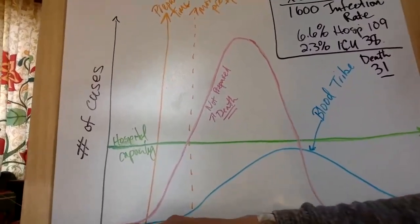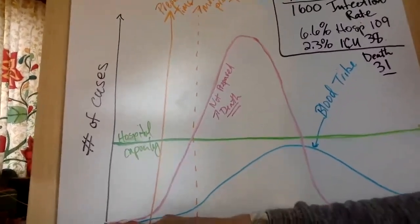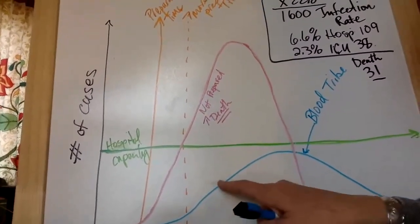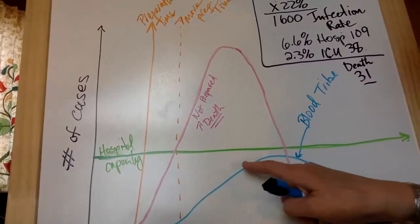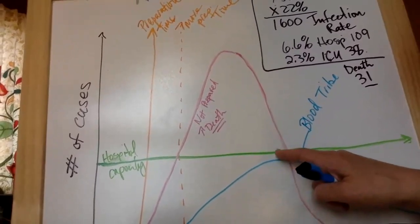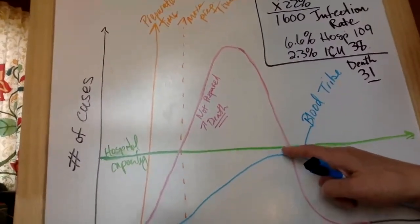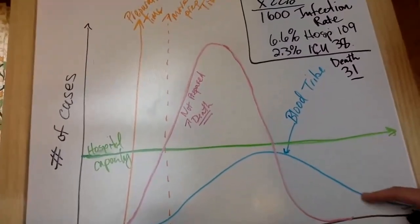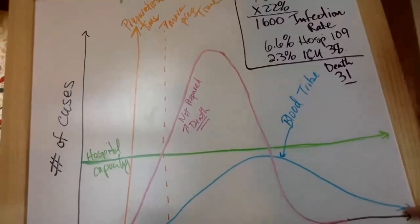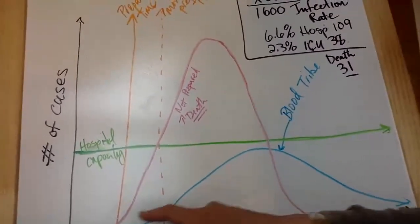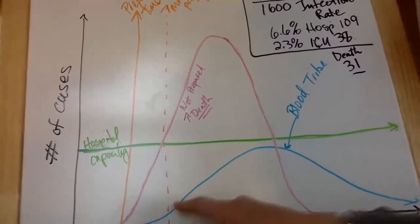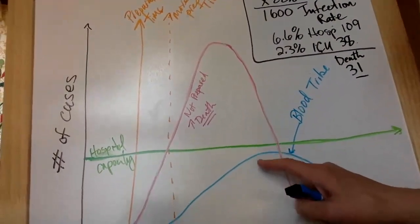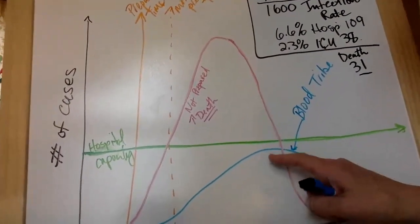So what's happening with Blood Tribe is we haven't seen our first case yet, but once we see our first case, we're hoping that what we're going to see is we're going to see a slow surge. We'll try to stay within the capacity of what we have here. And then we'll start seeing the infections going down, down, down till we get to zero. So what we're hoping for is a very slow curve and no deaths. If we can avoid death, we'll be doing really well.